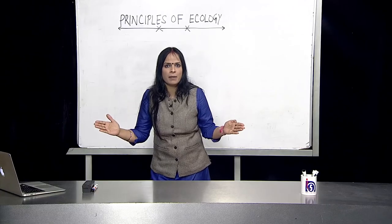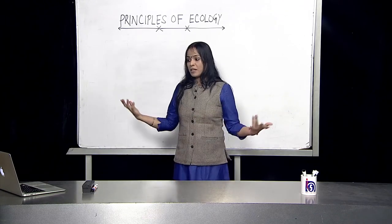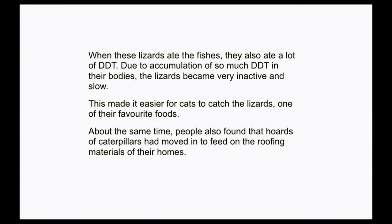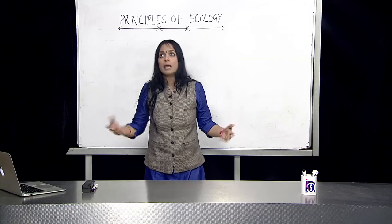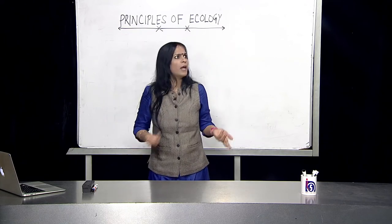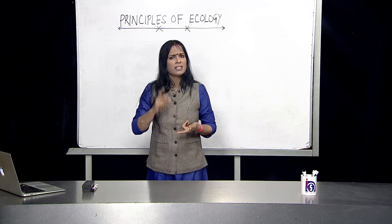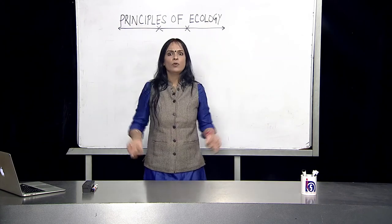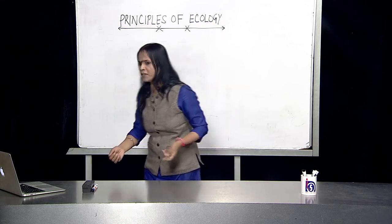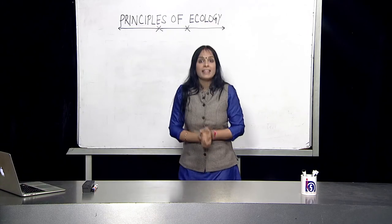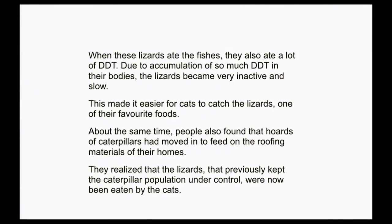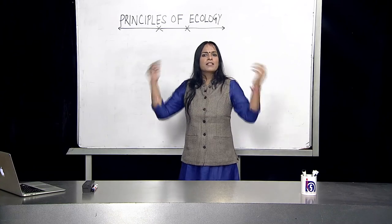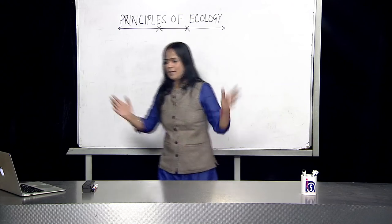The cats were eating a lot of lizards because lizards were easily available — they were not running away. Too much food was available, so too many cats came to Gyanpur. Because there were too many cats, the people of Gyanpur — who were living in a village and had roofs or huts made of grasses — suddenly realized that the roofs of their houses were getting eaten away. When they started investigating, they realized there were caterpillars — small little caterpillars which had suddenly grown in number and were eating away the roofs of their houses. Imagine sitting in your house and suddenly the roof develops holes. That happened in Gyanpur.